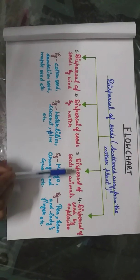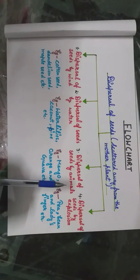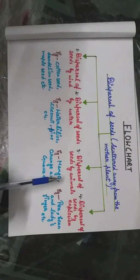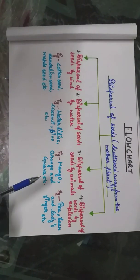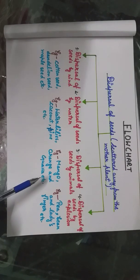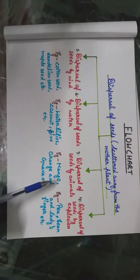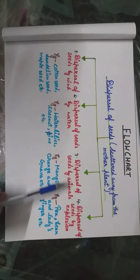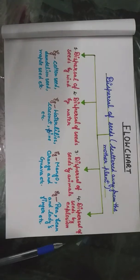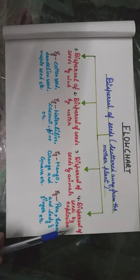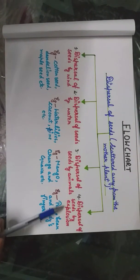Next is dispersal of seeds by animals. Examples include mango, orange, and guava. These are the examples of the dispersal of seeds by animals.